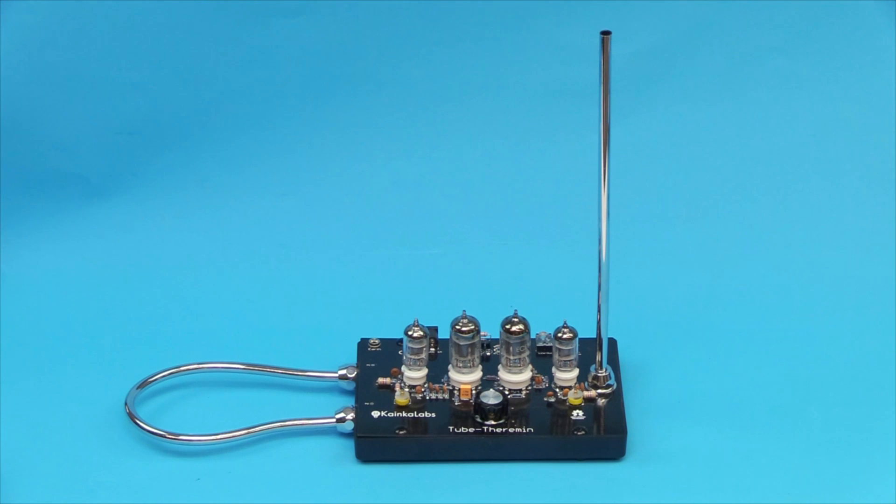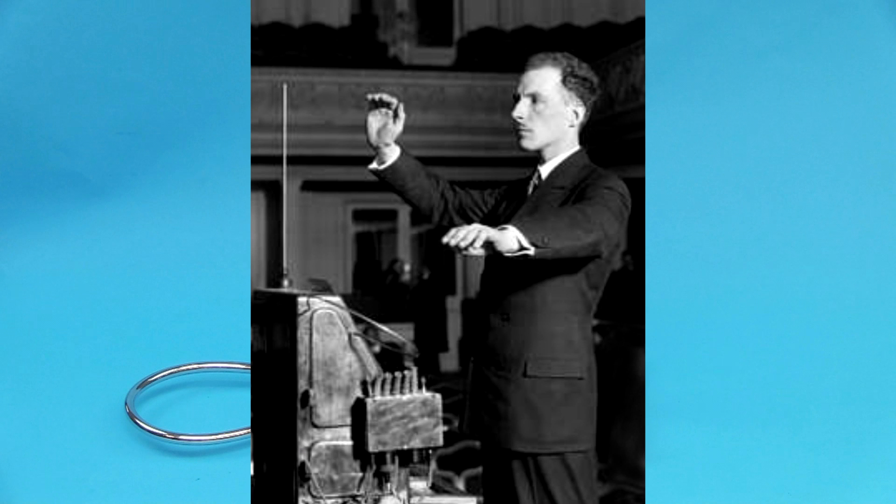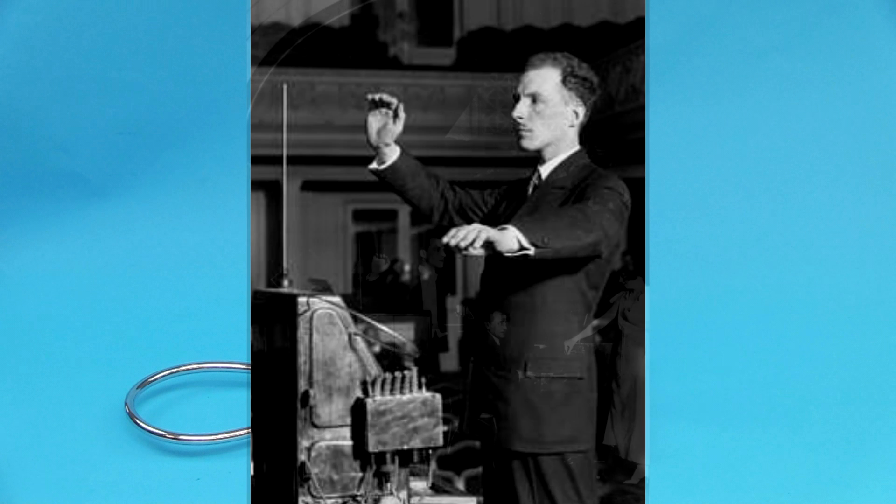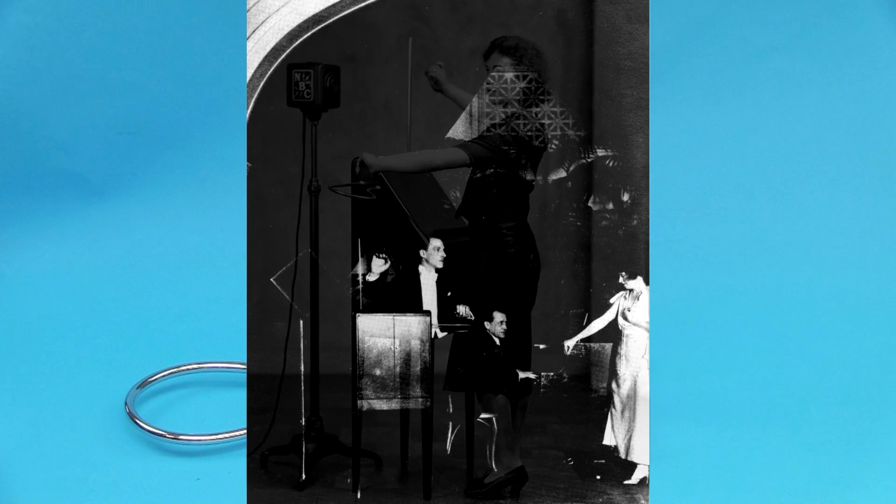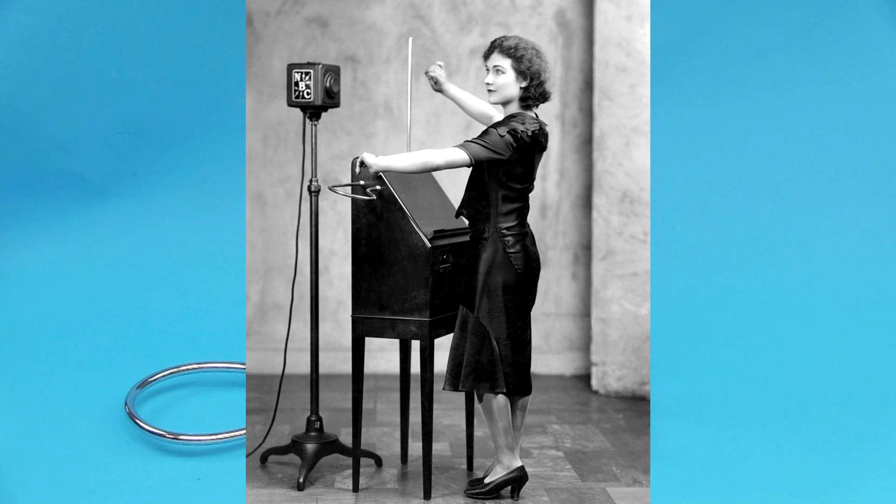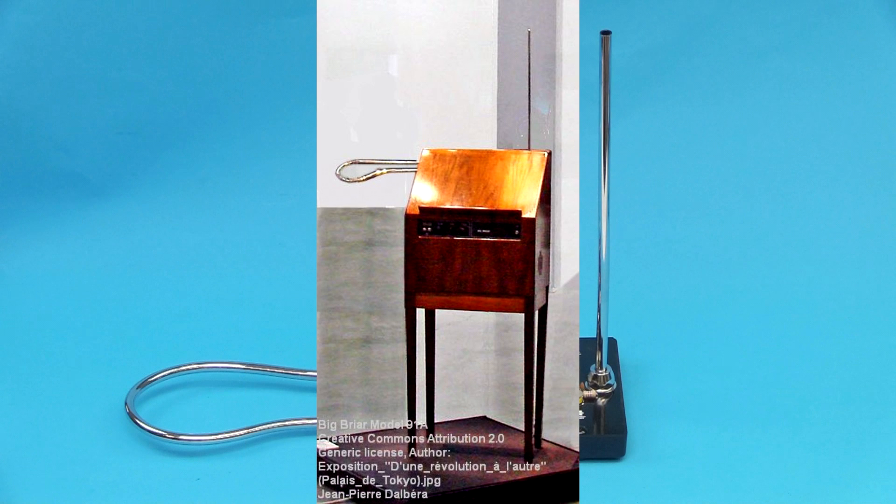Now let me tell you a little bit about theremin. A theremin is named after Russian physicist Lev Termin, or better known in the Western world as Leon Theremin, and he originally called his instrument the etherphone, probably because the sound is a little bit ethereal. He invented it in 1920 and patented it in 1928, selling the patent to RCA. You can see in the background some pictures of Leon Theremin and some of the original theremins, which are quite bulky.